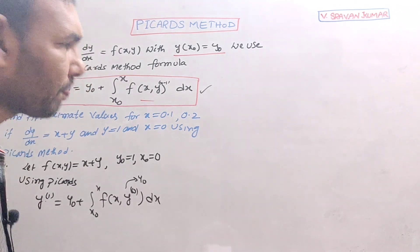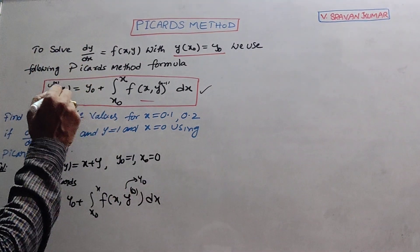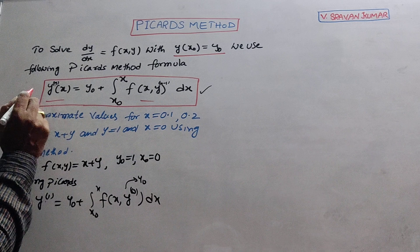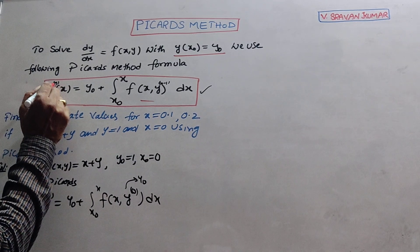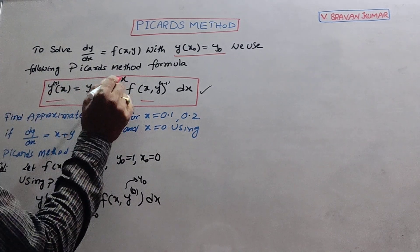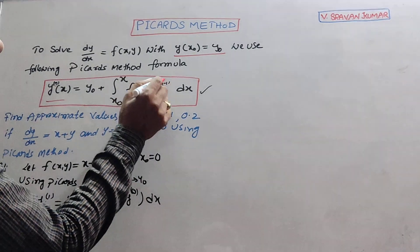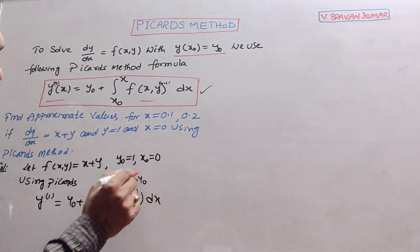Successive approximation means first approximation, second approximation. This n represents approximation. Here if you write 1, that is y first approximation: y₀ plus integral x₀ to x f(x, y⁰). y⁰ means y₀.